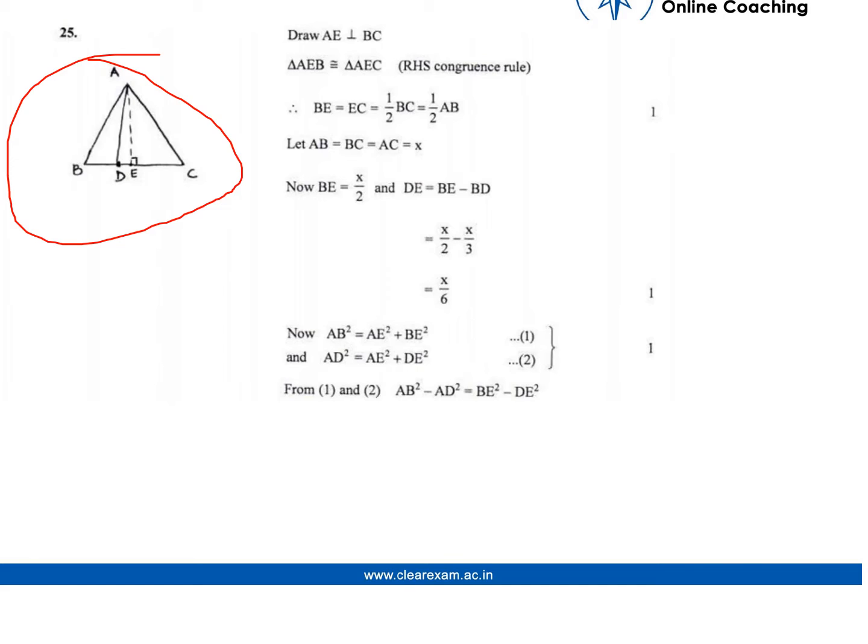We draw a perpendicular AE from A perpendicular to BC. Triangle ABE and triangle AEC are congruent by RHS congruence rule, so BE and EC equals half of BC.